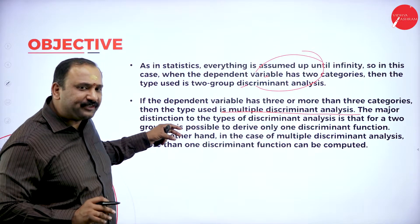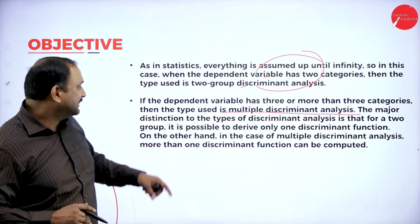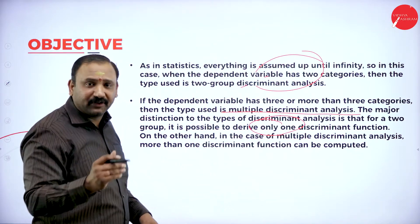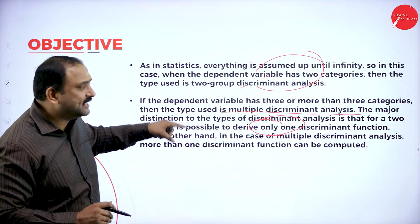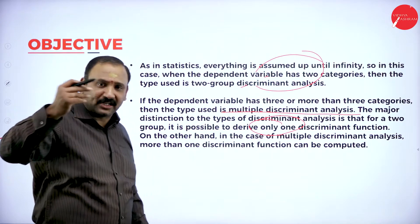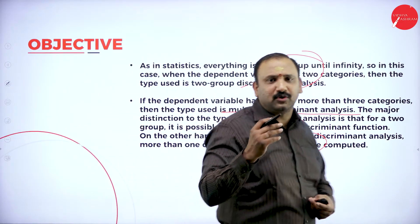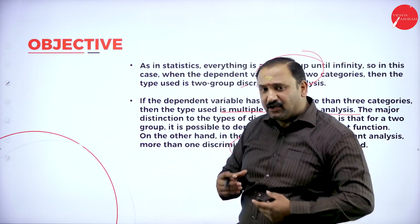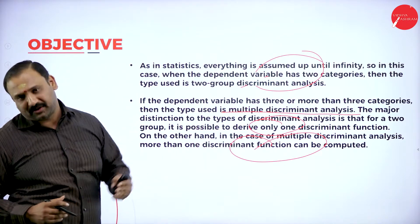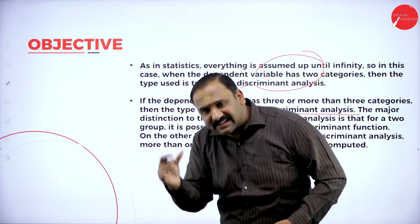This is a different segment and a different ideology altogether. The major distinction between the two types of discriminant analysis is that for a two-group, it is possible to derive only one discriminant function. On the other hand, in the case of multiple discriminant analysis, more than one discriminant function can be computed — at different levels and different sectors. For any given segment or methodology, there can be hundreds and thousands of variations, and this variation factor will help in rebuilding the entire situation.